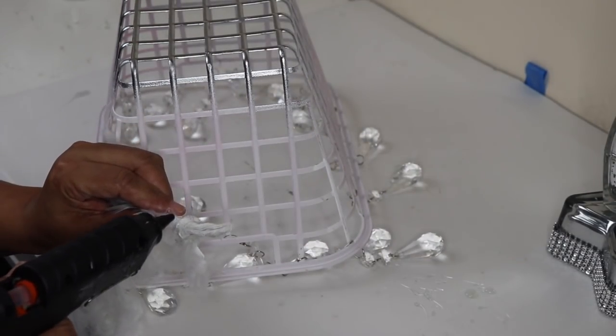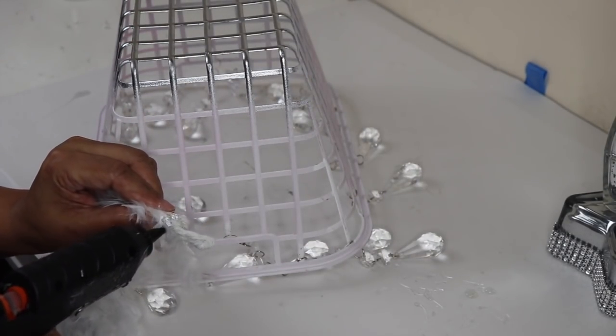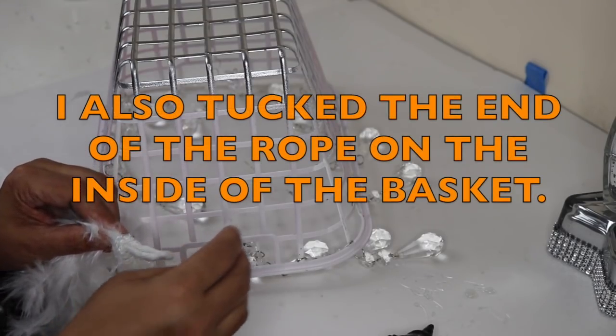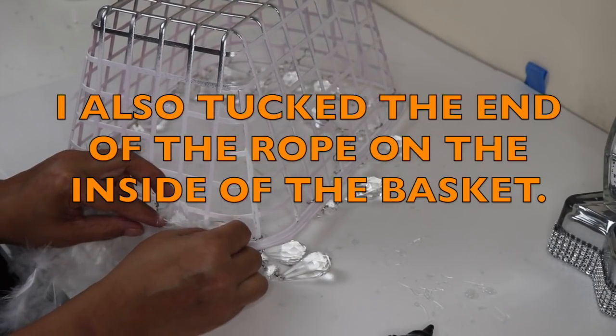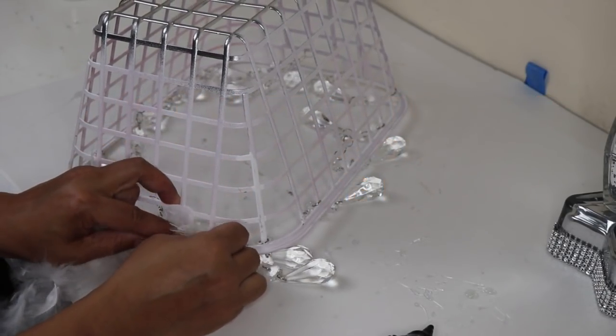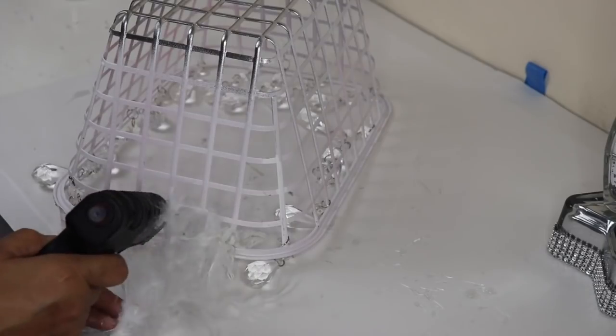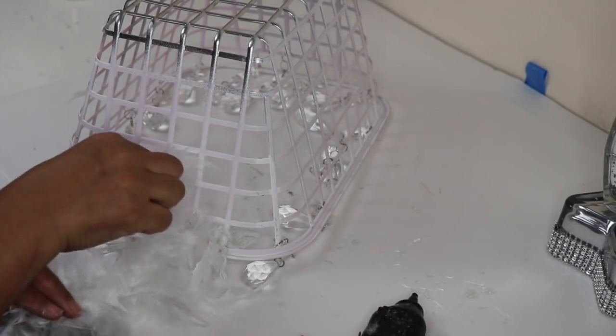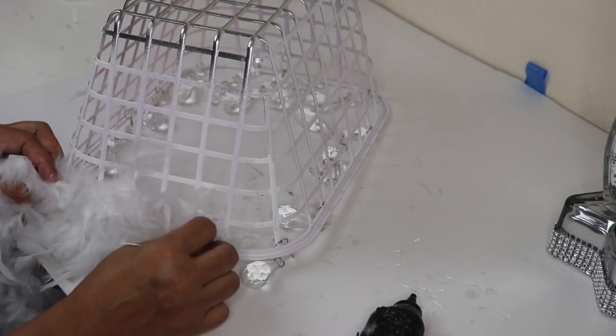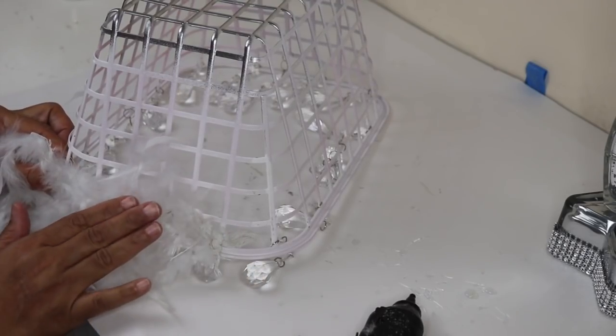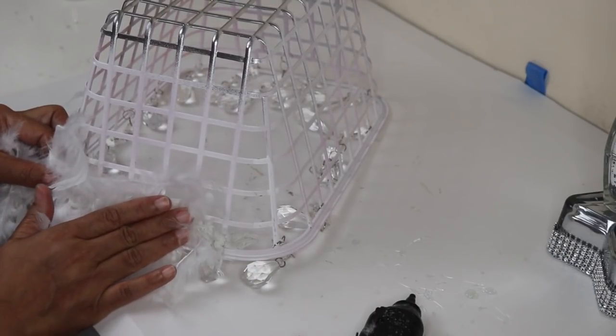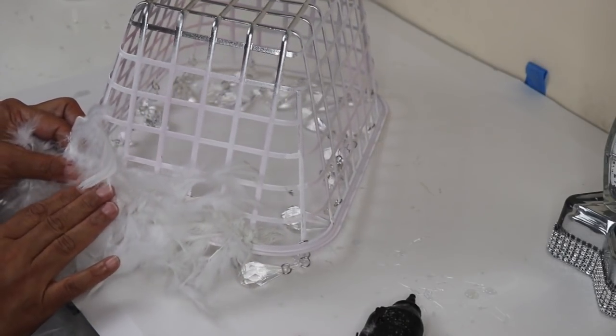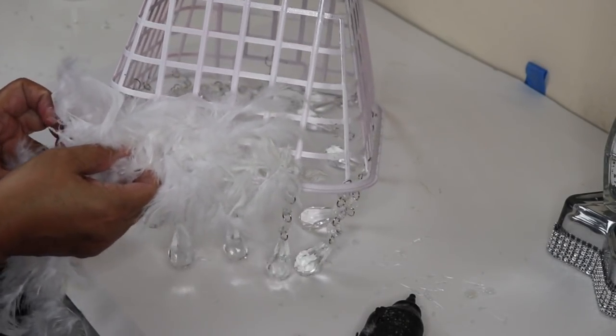Put some hot glue on the rope that's at the end of the ball and then press it at the base of the basket. Hold it in place until it sets up. Add more hot glue along the grid, press the feather ball down onto the glue then just pat the feather ball in place until it dries. Repeat these steps until the whole feather ball is attached to the basket.